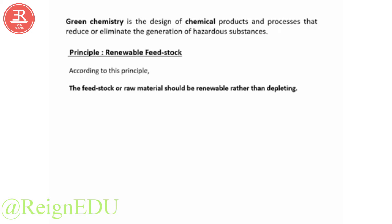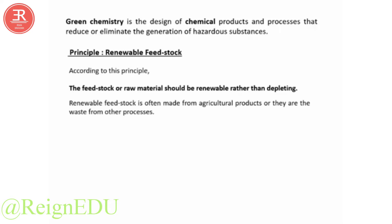According to this principle, the feedstock or raw material should be renewable rather than a depleting one. Renewable feedstock is often made from agricultural products or from the waste products of other processes.